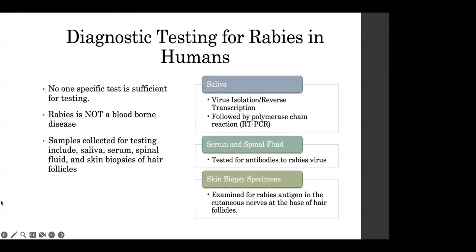The path of rabies virus passes from the muscle at the site of the bite or scratch to the brain through the nerves. When the virus reaches the brain, it multiplies, then moves from the brain to the salivary glands and saliva. Rabies is not a blood-borne disease, and one specific test is not sufficient for diagnosis. Samples collected for testing include saliva, serum, spinal fluid, and skin biopsies of hair follicles.